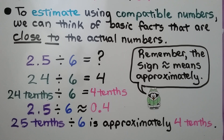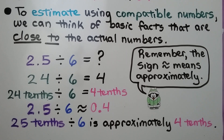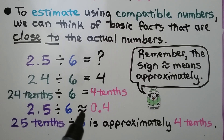To estimate using compatible numbers, we think of basic facts that are close to the actual numbers. We have 2 and 5 tenths divided by 6. We think 24 divided by 6 equals 4, so 24 tenths divided by 6 equals 4 tenths. That means 2 and 5 tenths divided by 6 is approximately 4 tenths. Remember, the double tilde sign means approximately.